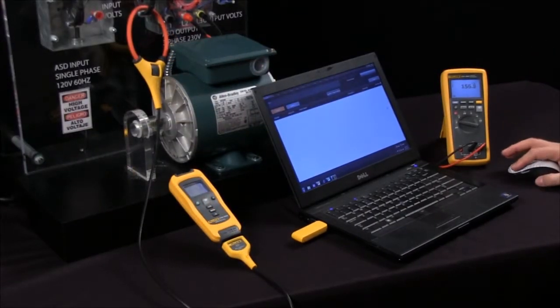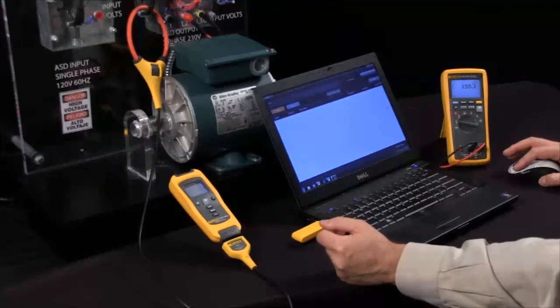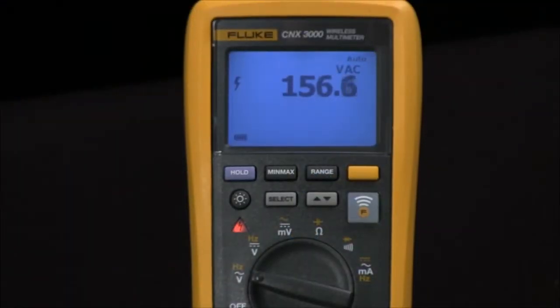How do I use my Fluke Kinex 3000 multimeter as both a receiver and a modular device? Right now I have my Kinex i3000 current module reading the current coming out of my drive.